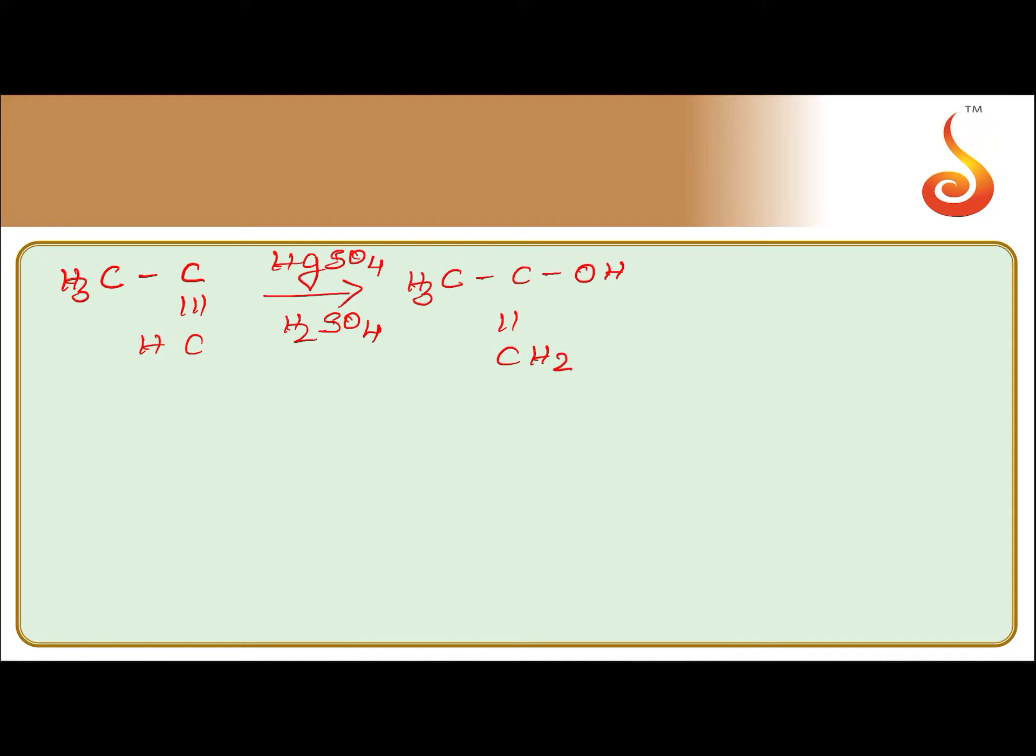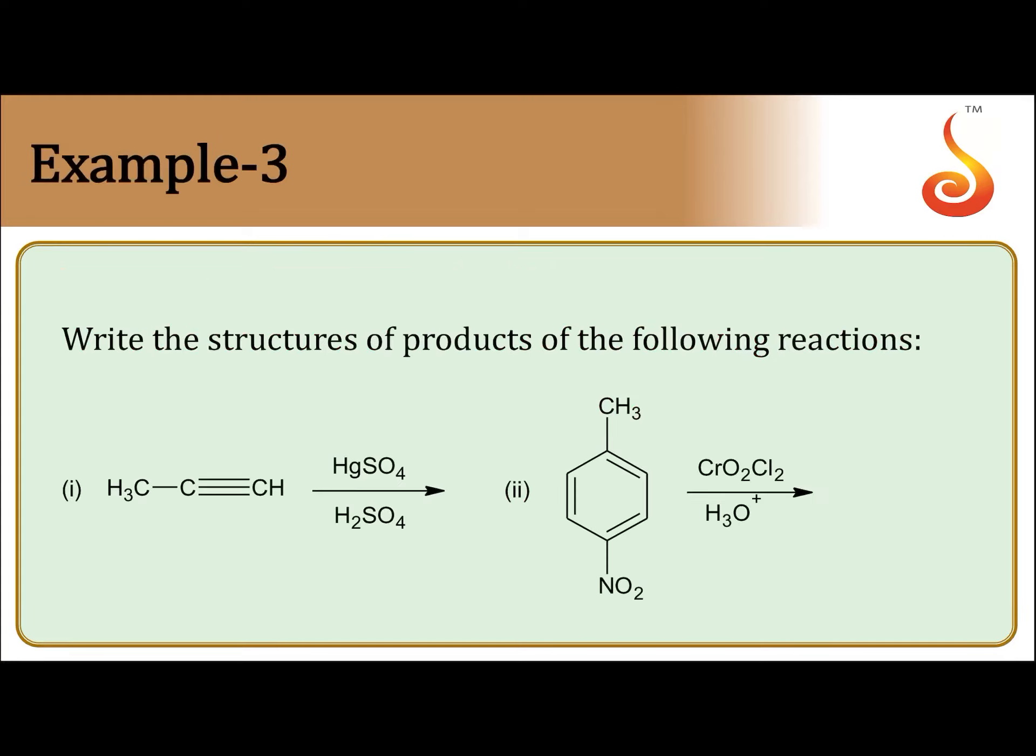Double bond CH2 means the negative part attacks the carbon atom having less number of hydrogen atoms. So you will get enol. Enol undergoes tautomerization to form ketone, so CH3-C double bond O-CH3. This enol tautomerizes to form ketone, so the final product is a ketone here.